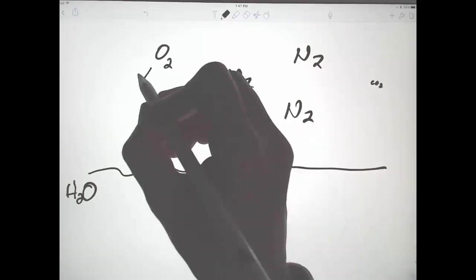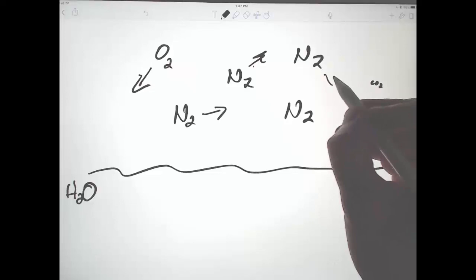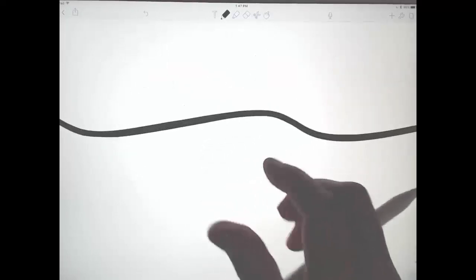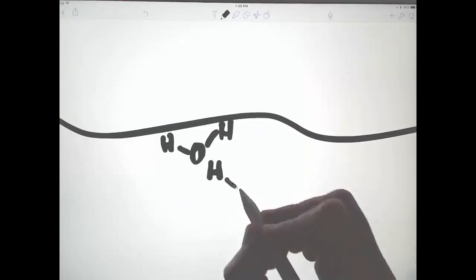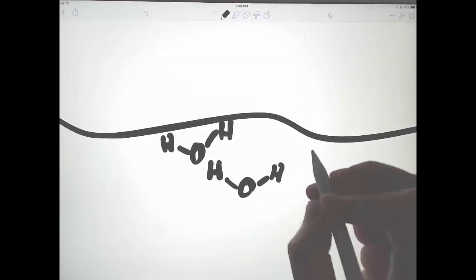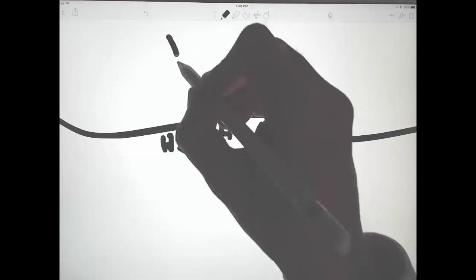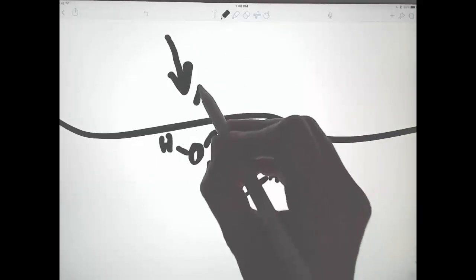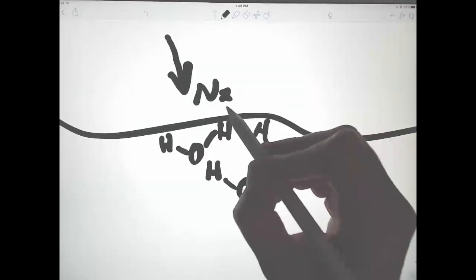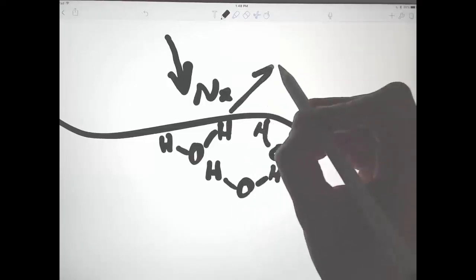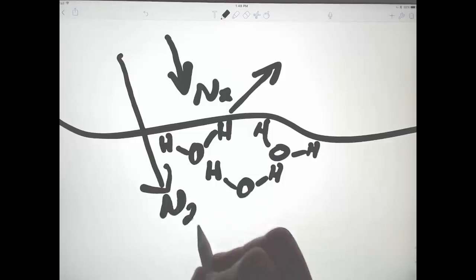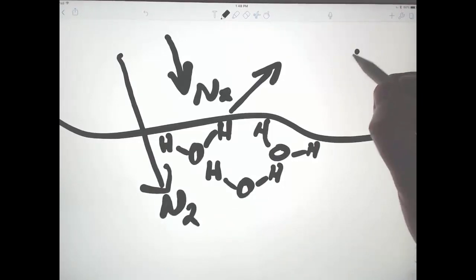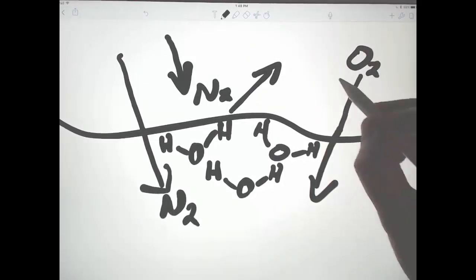So these molecules are all bouncing around at random. At the air-water interface, there are water molecules that are interacting with each other using hydrogen bonds, and any molecule of a gas that comes down has a chance of hitting a water molecule and bouncing away or of going between water molecules and entering the water. The same is true for nitrogen and oxygen.